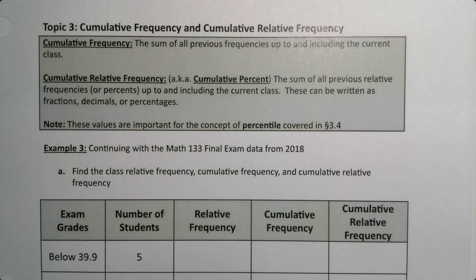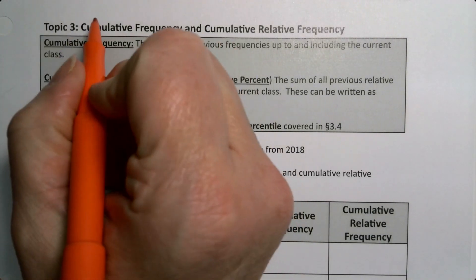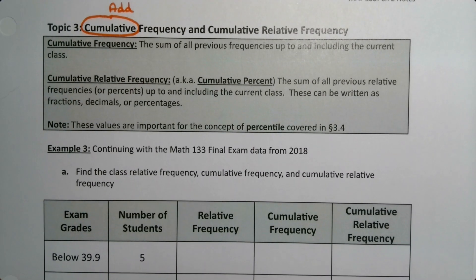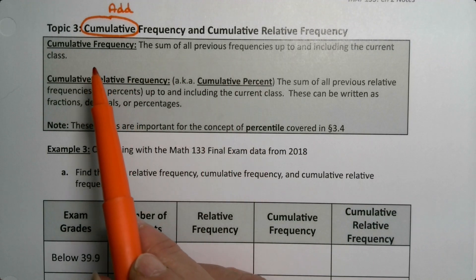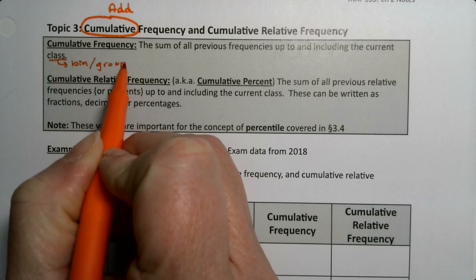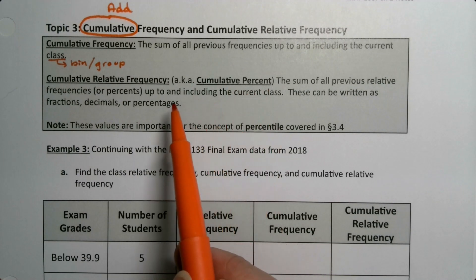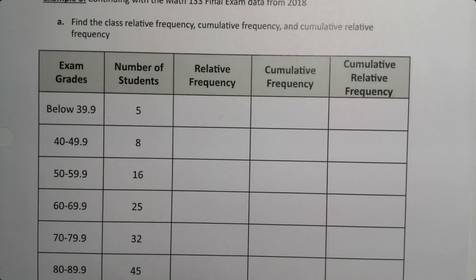In this topic we want to learn about cumulative frequency and cumulative relative frequency. Cumulative — like cumulus clouds that are gathered — means to add or gather. Cumulative frequency is when you add up the frequencies up until the current class or bin. Cumulative relative frequency, also known as cumulative percent, is when you add up the relative frequencies or percents. These ideas are important for the concept of percentile, which we'll discuss in section 3.4.